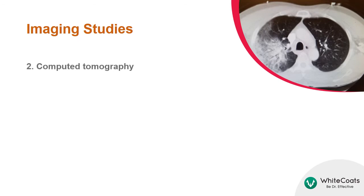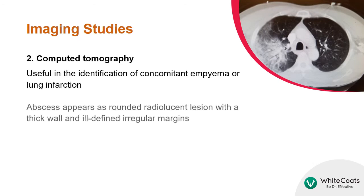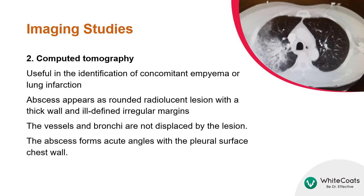Widespread tissue necrosis may promote progression of the underlying infection to pulmonary gangrene and can lead to empyema. CT is useful in the identification of concomitant empyema or lung infarction; the abscess appears as a rounded radiolucent lesion with a thick wall and fine irregular margins.